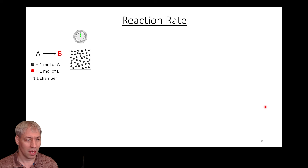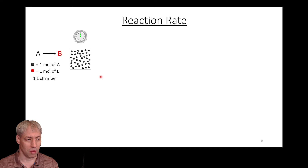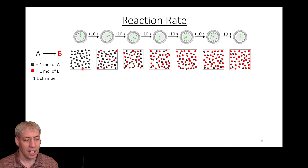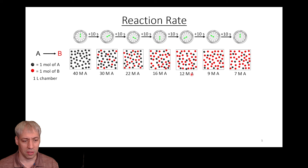Let's take a general reaction: A transforming to B. A is denoted by black spheres, B by red spheres. In a one-liter chamber where each sphere represents one mole, at time zero all we have is A. As A transforms to B, we monitor the reaction over time — taking a snapshot every ten seconds. We can progressively see the black spheres turn into red spheres. Starting with 40 A's, it goes to 30, then 22, then 16, then 12. B starts at zero and increases to 10, then 18, and so on.